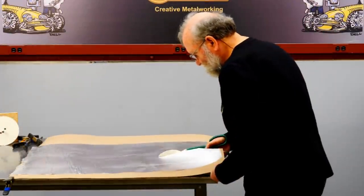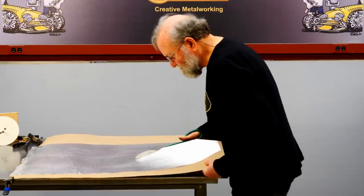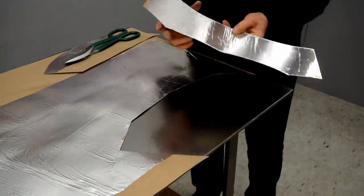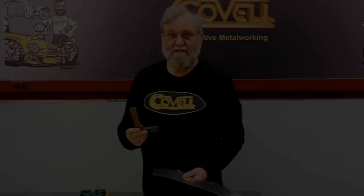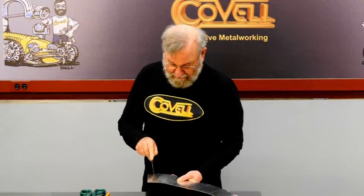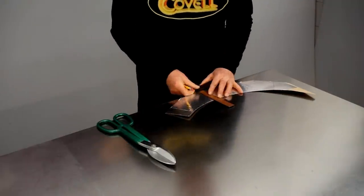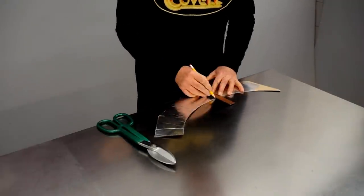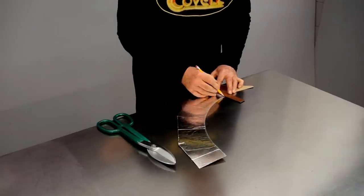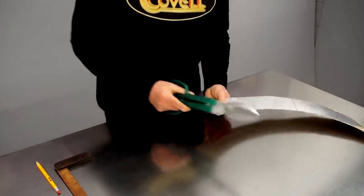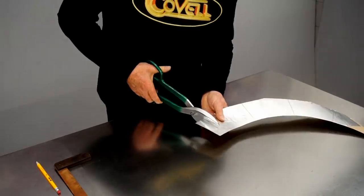So there's our pattern. Using a square, I'm going to draw a line to the center of each of the quadrants I marked on the pattern. And now I can trim the excess off the ends.